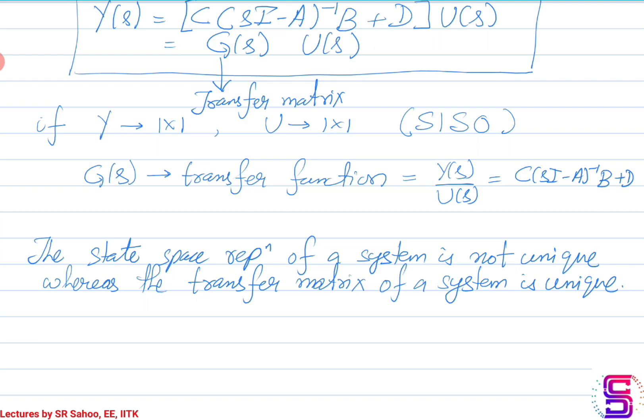If I give you a transfer function for a system and I ask you to find a state space representation, you can find infinite possible state space representations because it depends on how you handle the transfer function. In one of the lectures, possibly when we will be discussing the canonical form representation of the systems, there we will discuss about how to come back from a transfer function to a state space form.